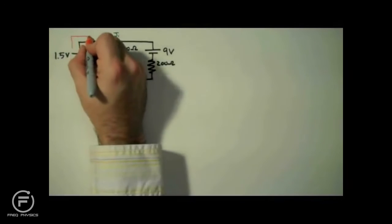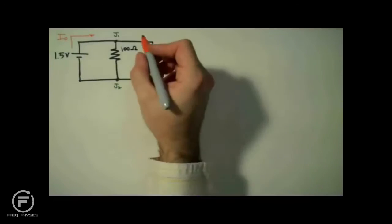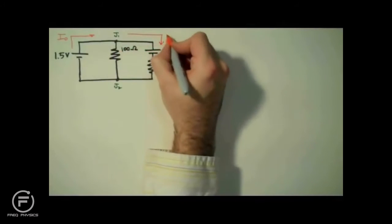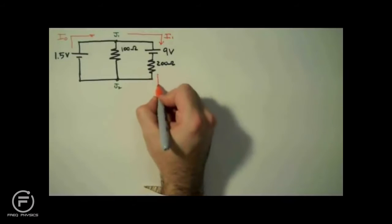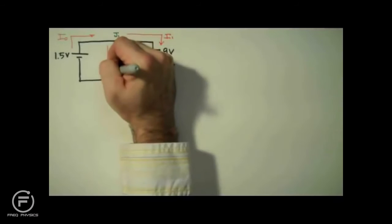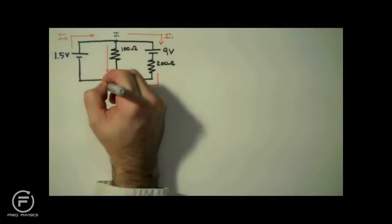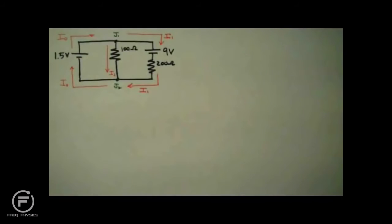Next, we label our currents. I'm going to label this current I0. After junction 1, I'll have I1 on the right leg. Note that I0 does not pass through junction 1. This middle leg will be I2. And when I1 and I2 rejoin, we have I0, because the current coming out of that 1.5 volt battery needs to be the current coming back in. Also note that the directions of these currents at this point are arbitrary — we'll find out if we chose the right directions after we complete the problem.